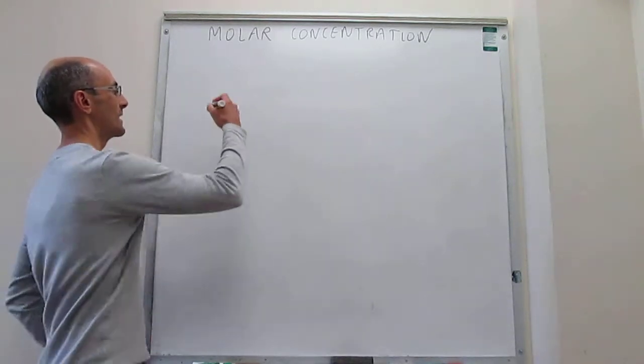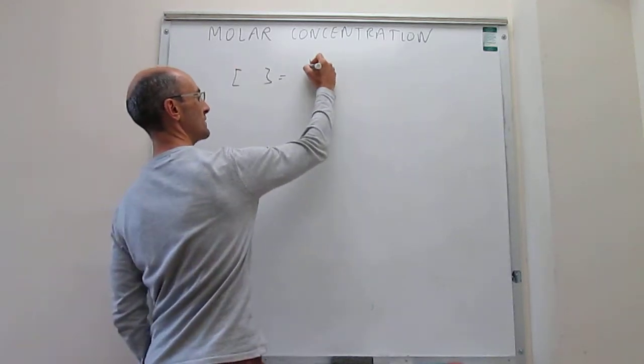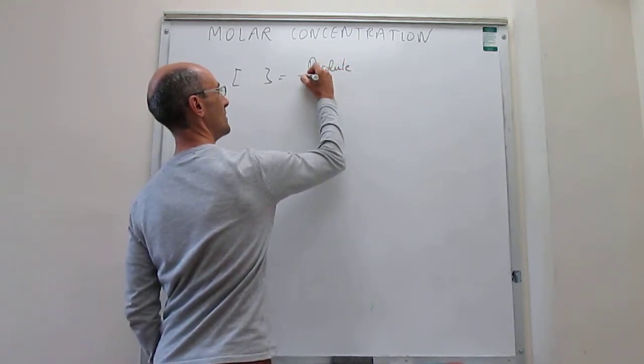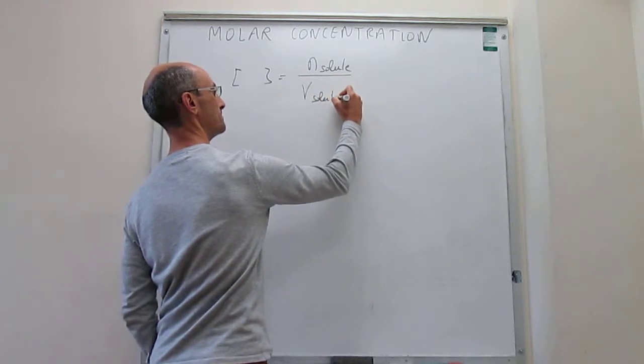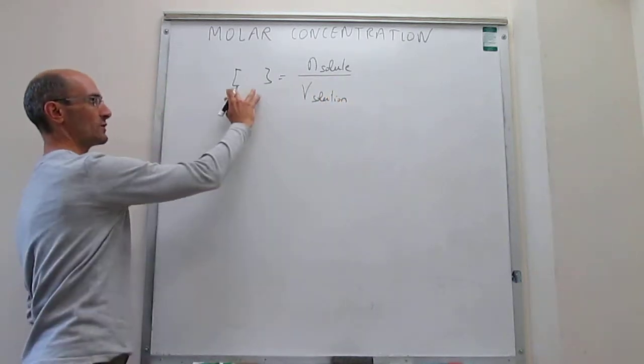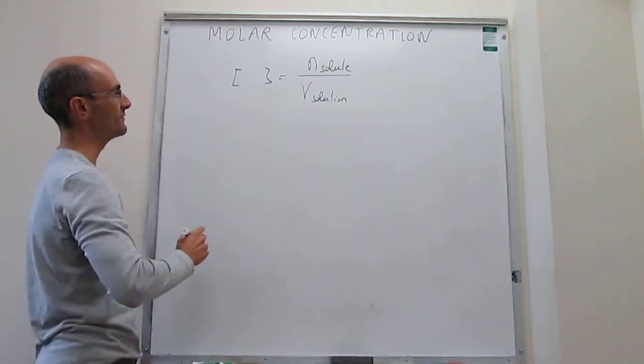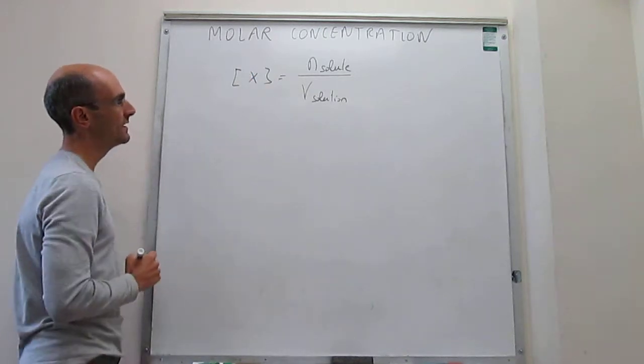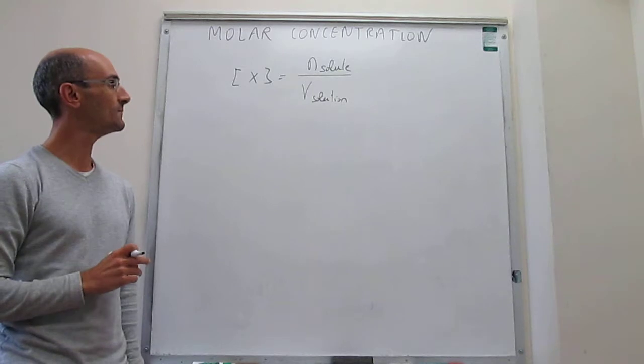Molar concentration is defined as the number of moles of a solute that you have in solution over the volume of the solution. The term that we use for molar concentration are square brackets, and inside you have the chemical symbol. So for a given compound X, the molar concentration would be expressed with square brackets and then X.